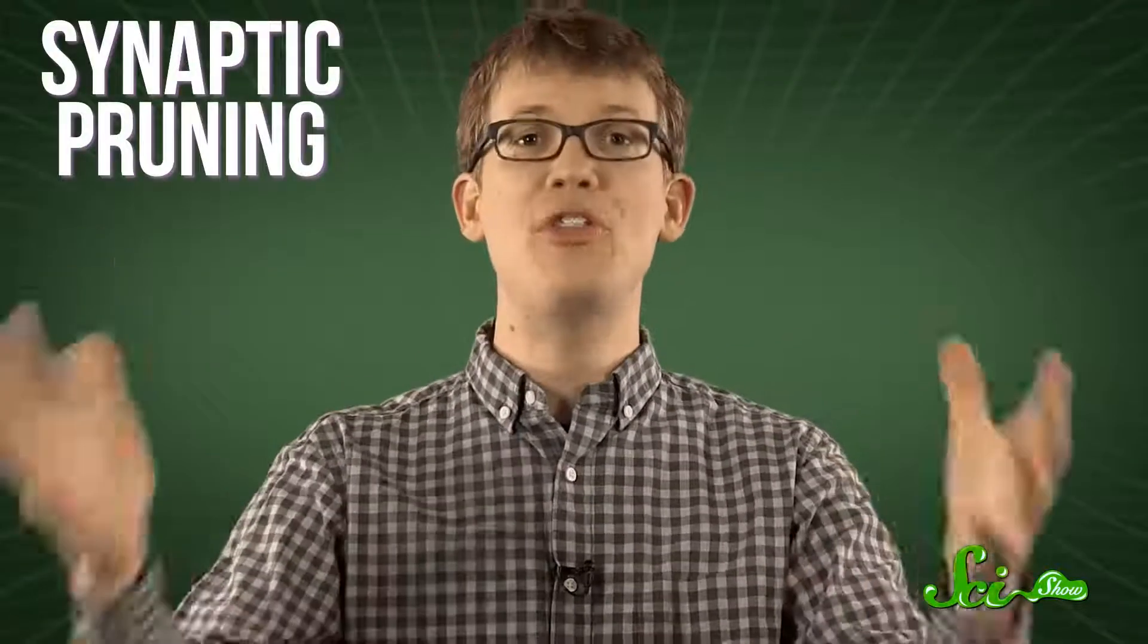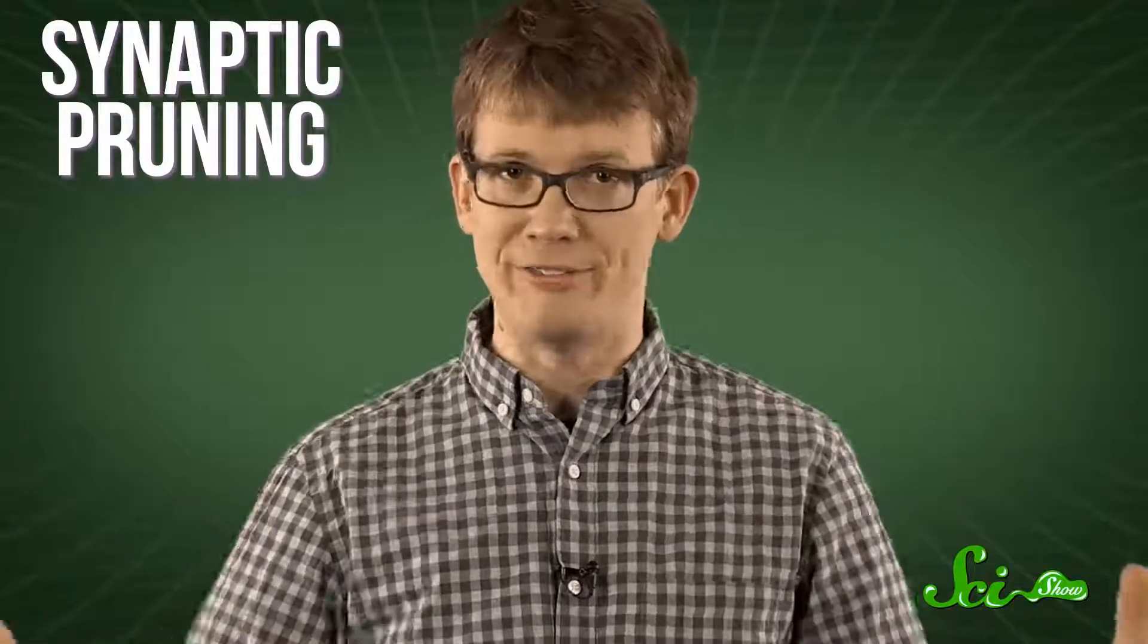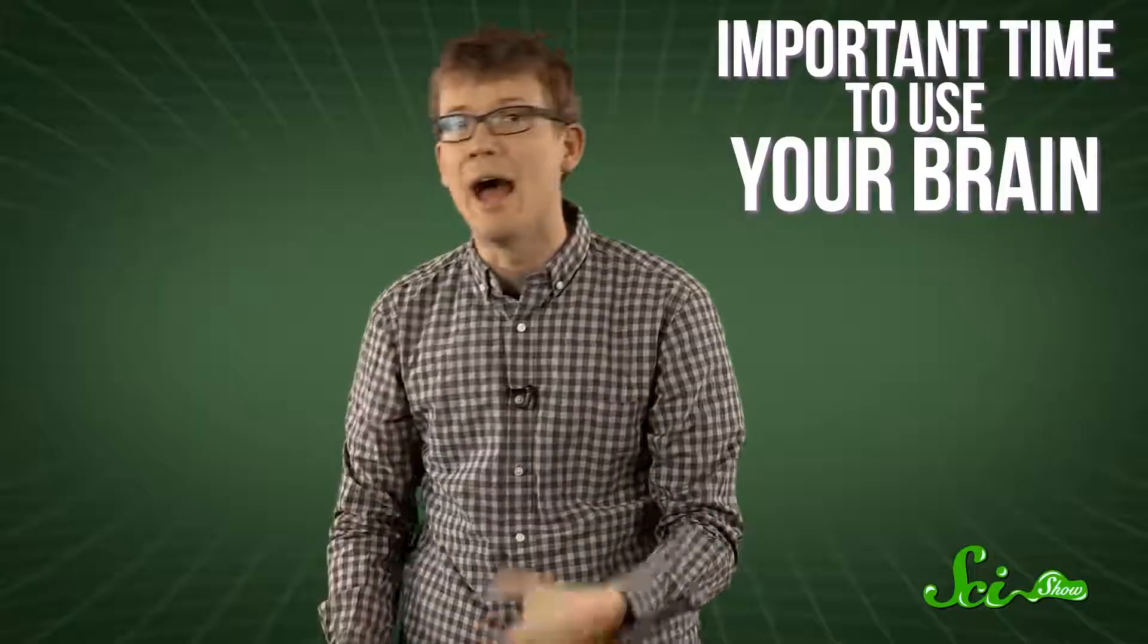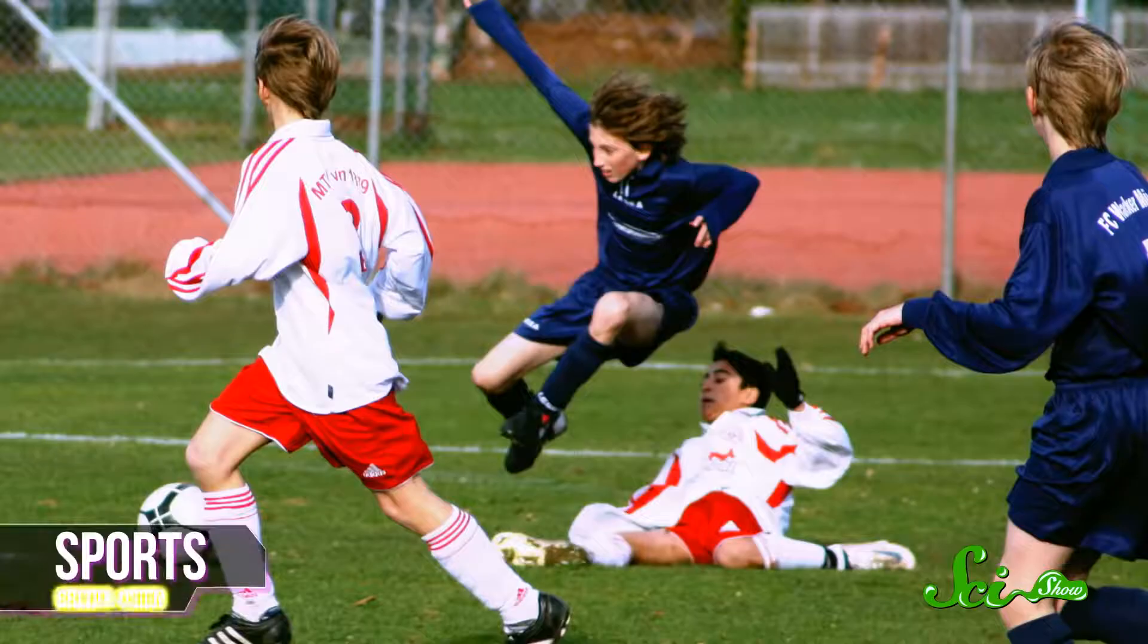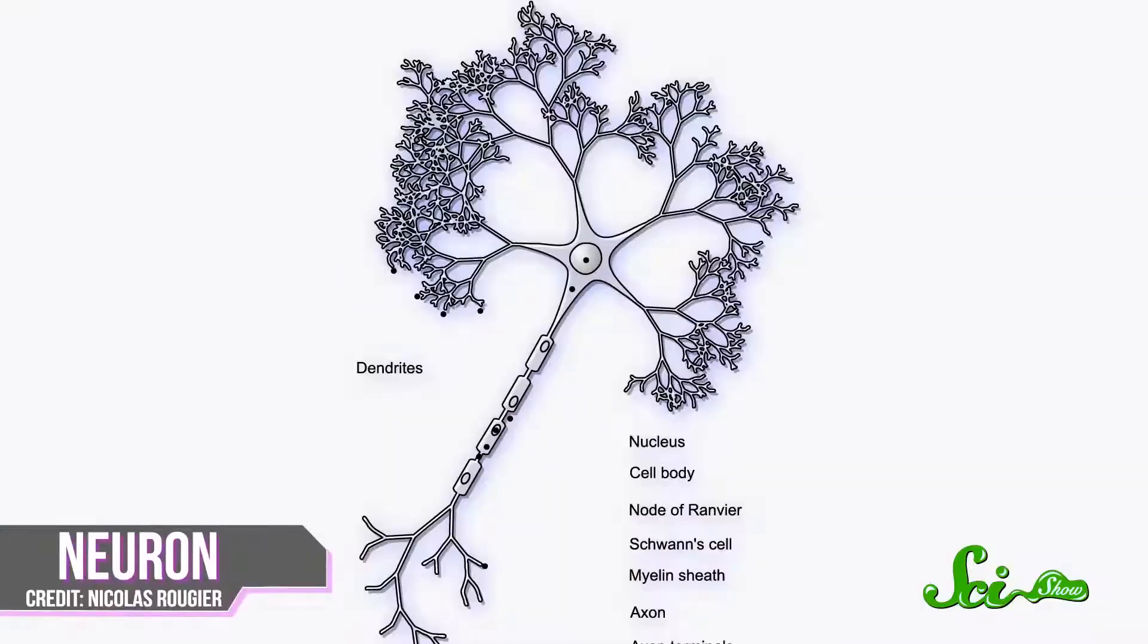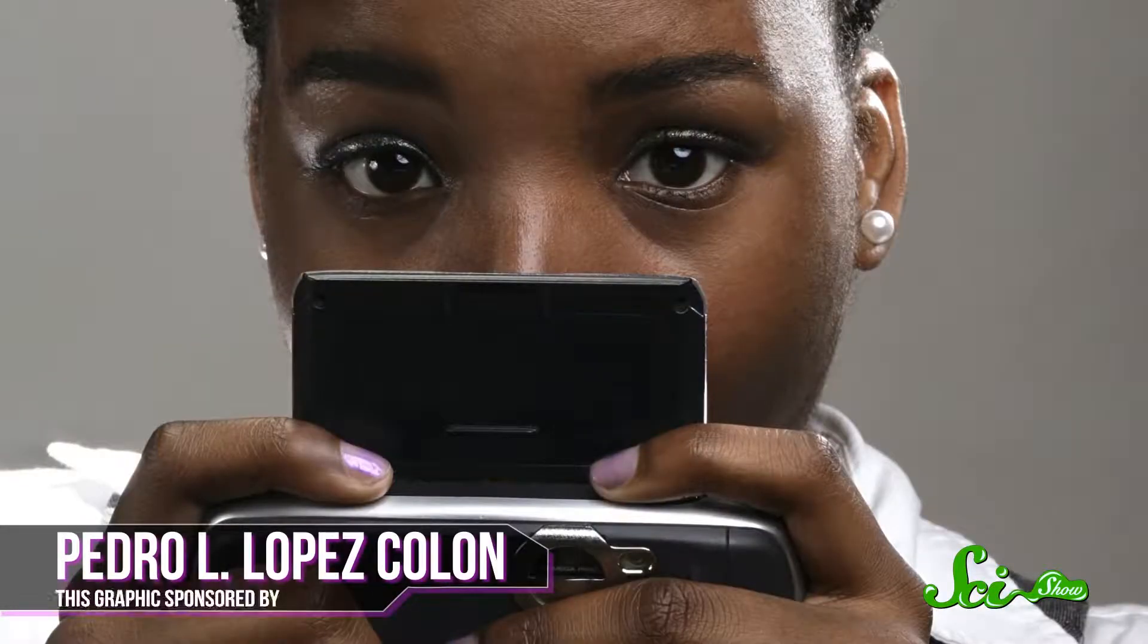You actually start losing connections that you don't use enough in a process called synaptic pruning, which has led to a theory that this is kind of a use it or lose it phase. Meaning, adolescence could be an especially important time to use your brain. Play an instrument, engage in sports, write poetry, learn a language. Because by doing these things, you're helping hardwire those synapses and giving your brain topiary a lovely, lasting shape. Whereas if you're sitting around all day playing Candy Crush, those will be the connections that survive, which you don't need.